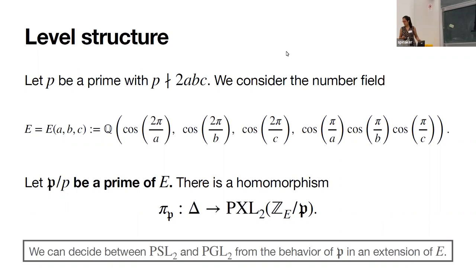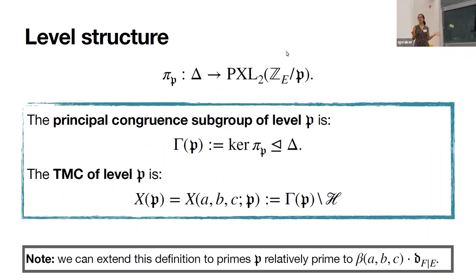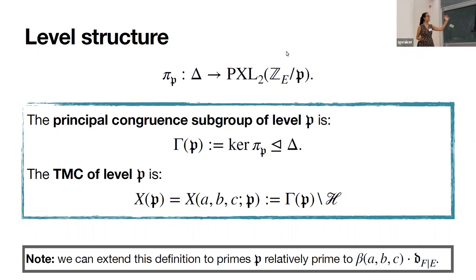Once we have these homomorphisms, we can define the level structure. We take this homomorphism, and then our congruence subgroup Γ(p) is just the kernel of the homomorphism, so it's contained in the triangle group. Our triangular modular curve of level p — depending on the triple (a,b,c) and the prime — is given by the quotient of the action of this congruence subgroup on the upper half-plane. For p not dividing ABC, we construct this; if p does divide ABC, there is a similar definition.